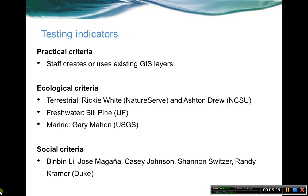After the original selection of the indicators, we've been working on all these different pieces. For the practical criteria, the staff at the cooperative have been creating and/or using existing GIS layers to depict the indicators. Fairly simply — the data were there and we could put it together. So let's go ahead and make the GIS layers and find out what we run into along the way. That's been the testing so far for the practical criteria.